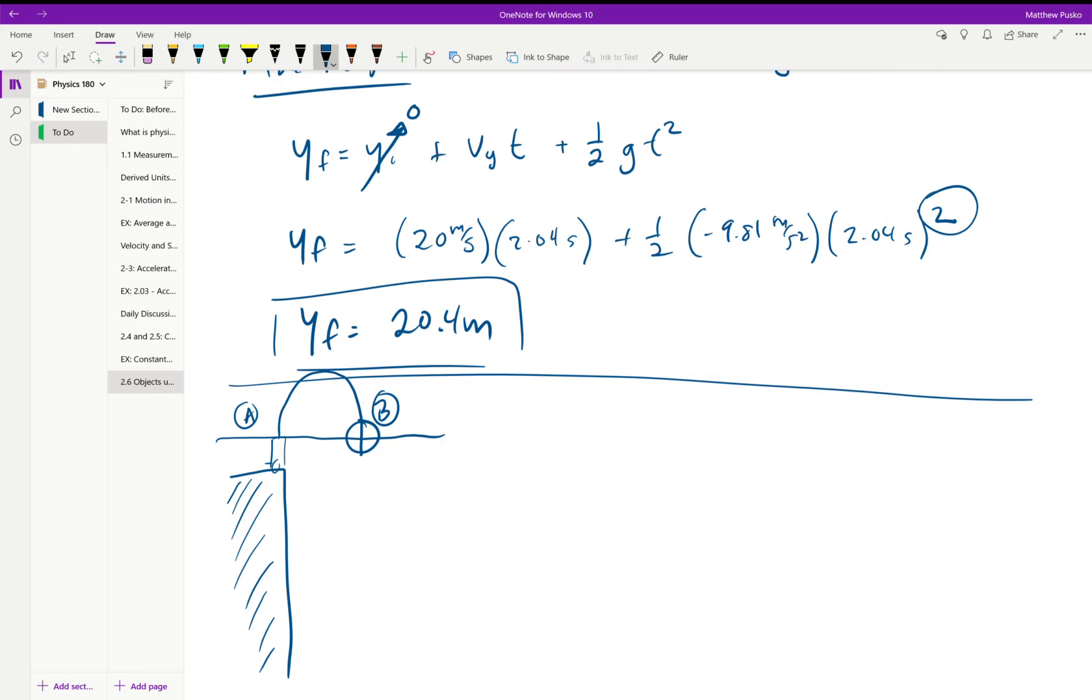If you throw something up from the ground level, whatever velocity you throw it at is going to return at that same speed minus a little bit due to drag or friction due to air resistance.